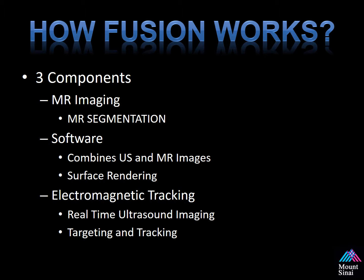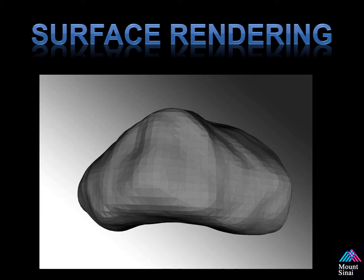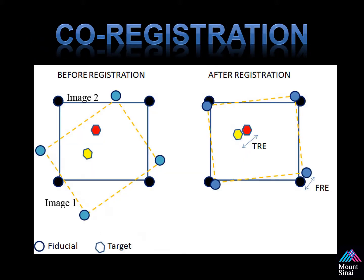Other technologies use different ways to solve this problem, but tracking itself allows for the real-time ultrasound imaging to be combined to allow you to target and track the prostate. This is an example of surface rendering. See those small triangles on the contour of the prostate. These contours and triangles are created both for the ultrasound and the MRI, and we're able mathematically to combine them together to match the data sets to allow you to target specific areas within the prostate. This is a simplified version of co-registration, or fusion.